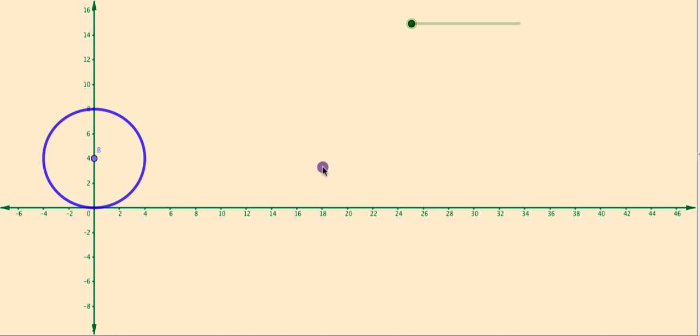Now, you can observe when I change the size of the circle, the ratio of circumference to its diameter remains the same, which is a mathematical constant, pi.